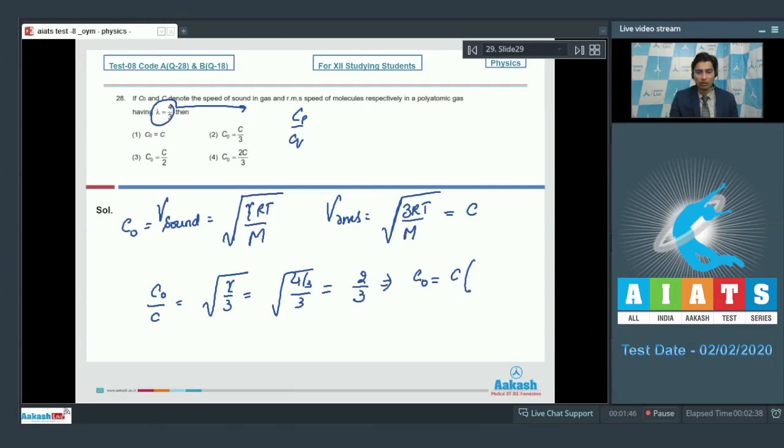Dear students, this means that C0 will be equal to C into 2 by 3 and therefore, option number 4 for this question is the correct answer. Now, let us proceed to question number 29.